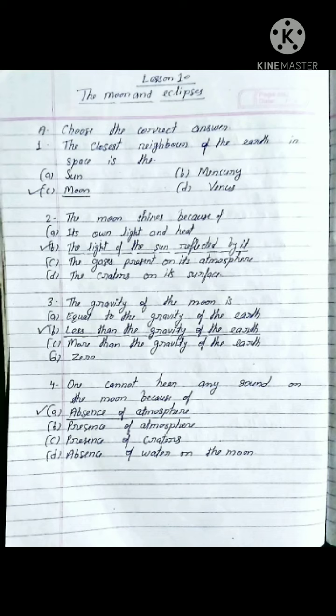Question number three: The gravity of the Moon is — option A: equal to the gravity of the Earth, option B: less than the gravity of the Earth, option C: more than the gravity of the Earth, option D: zero. The gravity of the Moon is less than the gravity of the Earth.